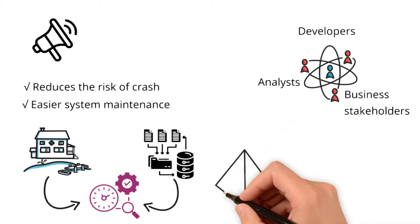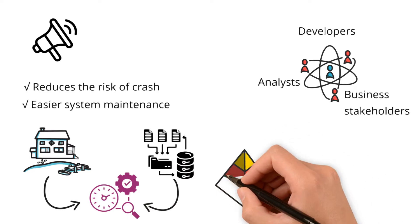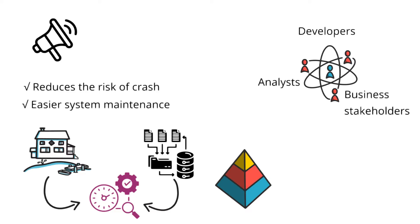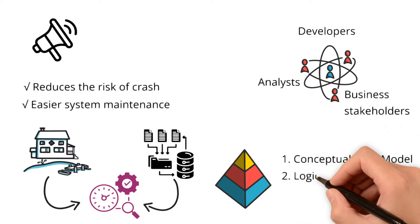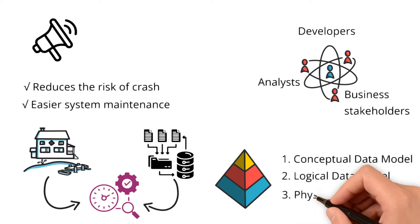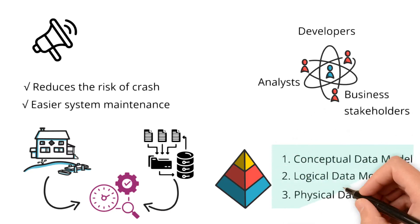Let's look at the hierarchy of this. There are three levels of data models: conceptual data model, logical data model, and physical data model. Let's understand what each data type represents.